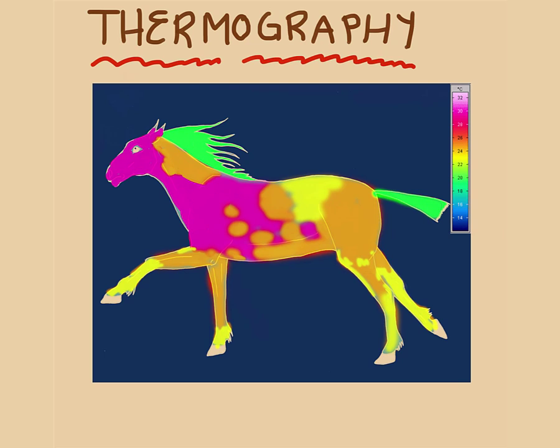There are areas that are warmer and cooler as indicated by the color scale on the side. You can see that the mane and the tail are green which are cool, and this makes sense since they don't produce heat.